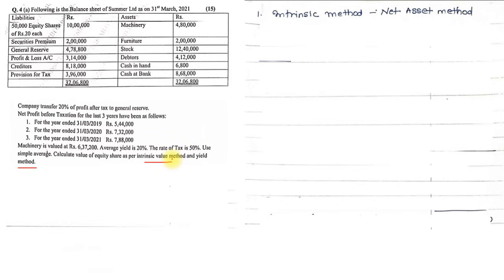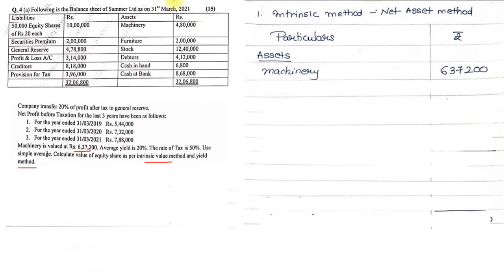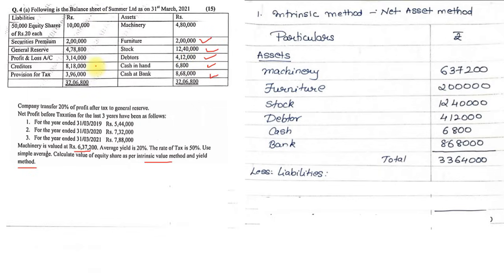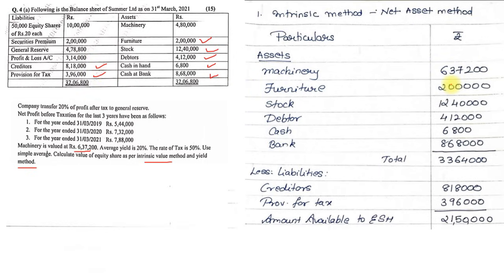For the Intrinsic Value Method (also known as the Net Asset Method), the format is: Total Assets less Total Outside Liabilities. Under assets: Machinery 6,37,200; Furniture 2,00,000; Stock 12,40,000; Debtors 4,12,000; Cash 6,800; and Cash at Bank 6,68,000. Total assets come to 33,64,000. Outside liabilities are Creditors 8,18,000 and Provision for Tax 3,96,000. Subtracting gives net assets available to equity shareholders of 21,50,000.